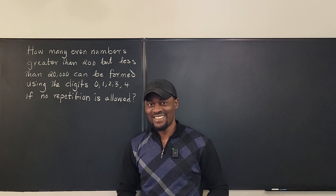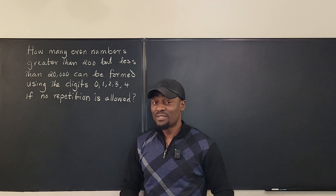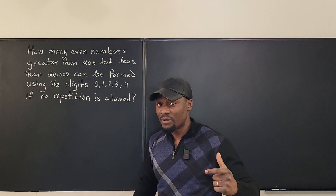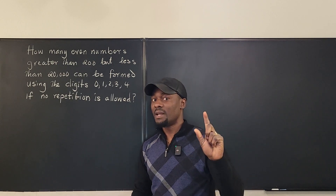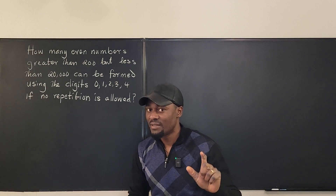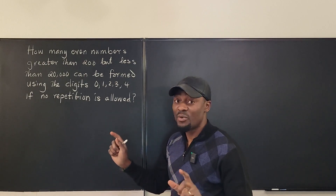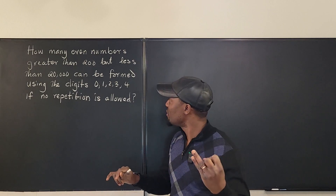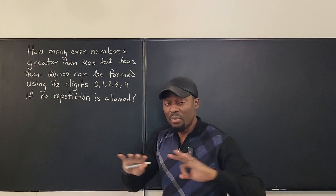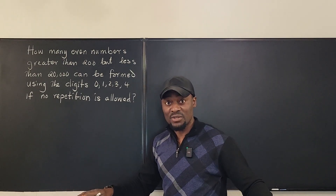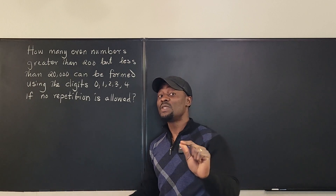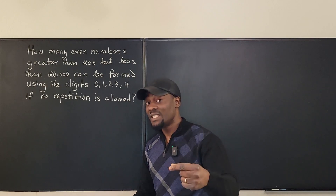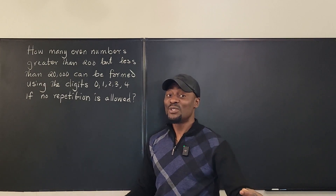Welcome to another video. Let's find the number of even numbers greater than 200 but less than 20,000 that can be generated using only the digits 0, 1, 2, 3, and 4, but no repetitions are allowed. Once you use a digit once, you can't use it again.